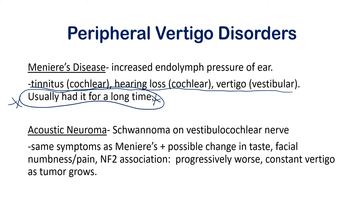The next disorder is acoustic neuroma, also called vestibular schwannoma, because it's a schwannoma — a tumor of the Schwann cells — on the vestibulocochlear nerve. Since it affects the entire vestibulocochlear nerve, the signs are the same as Ménière's disease: tinnitus, hearing loss, and vertigo. You could also have a possible change in taste, facial numbness, or pain due to other nerves being affected, like the trigeminal. Acoustic neuromas have an association with neurofibromatosis type 2.